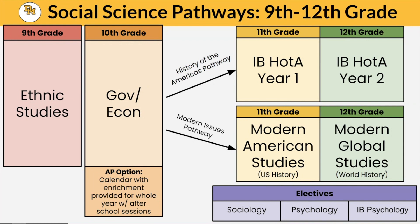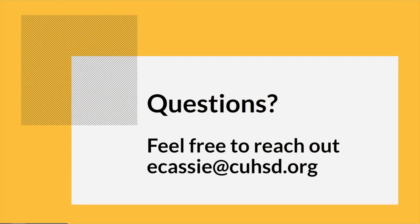If that's not their cup of tea, students also have the opportunity to take the modern issues pathway, essentially world history — labeled as World History and US History. In 11th grade they take standard US History framed with a more modern approach, and as seniors they take World History with the same modern framing. Students also have the opportunity to take electives — sociology, psychology, and IB Psychology. If you have any further questions, feel free to contact me, and I look forward to hearing from you.